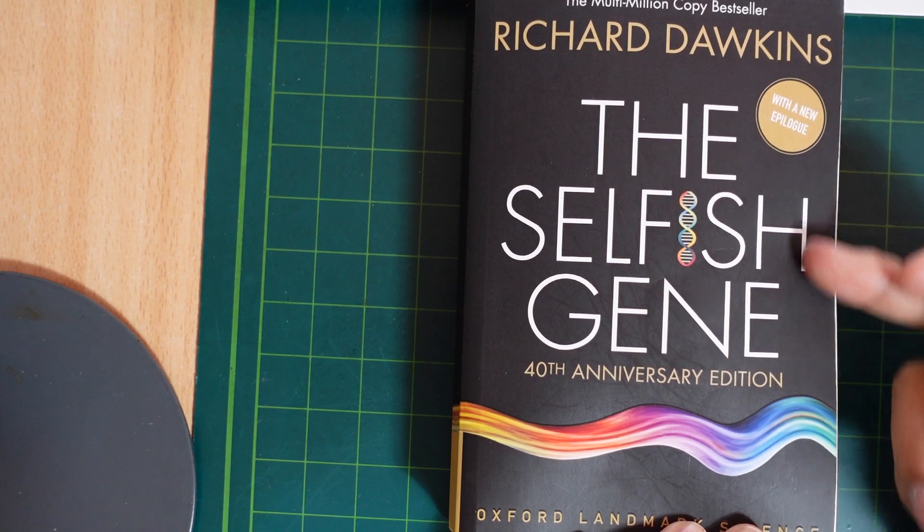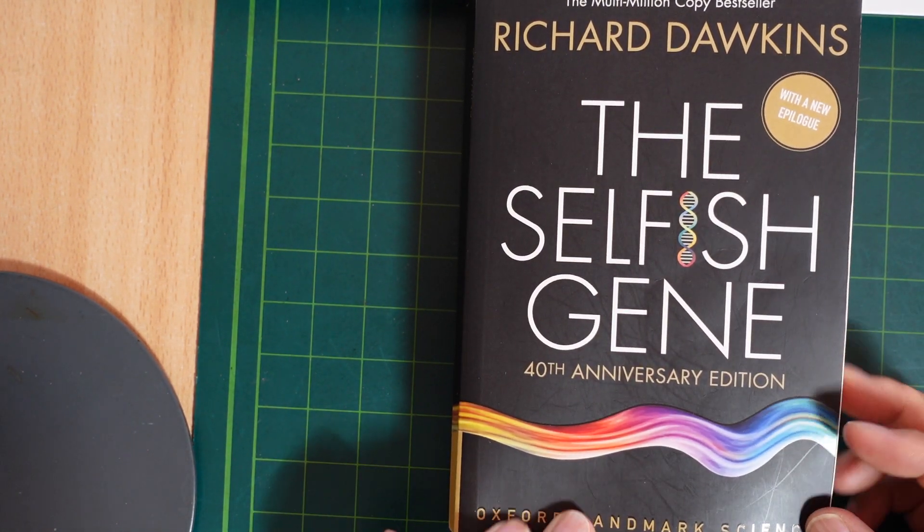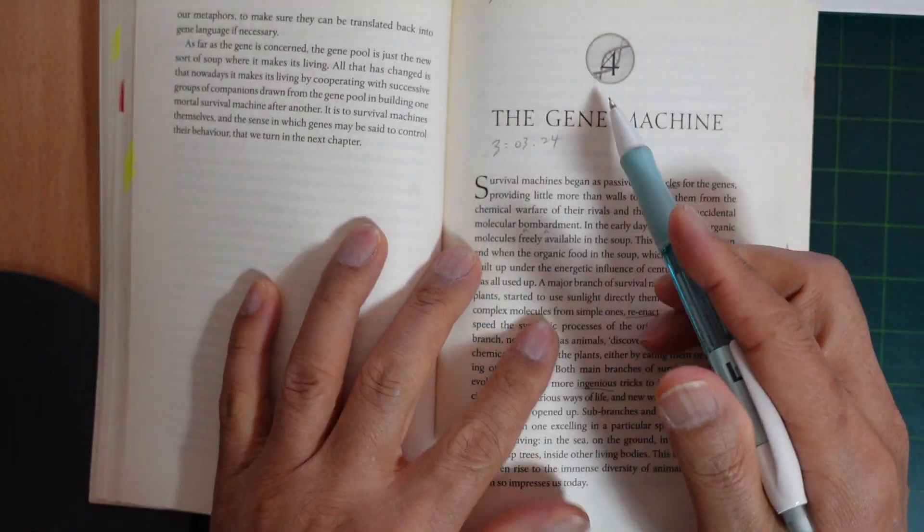The Selfish Gene by Richard Dawkins, Chapter 4.